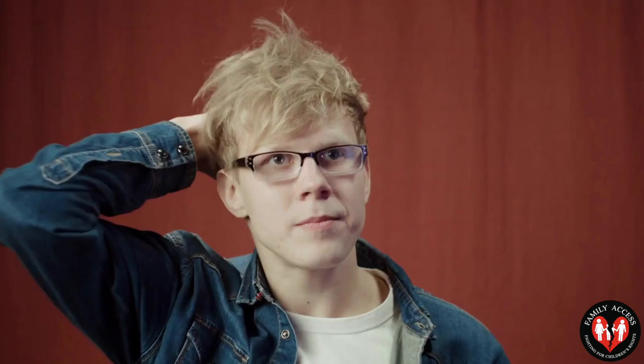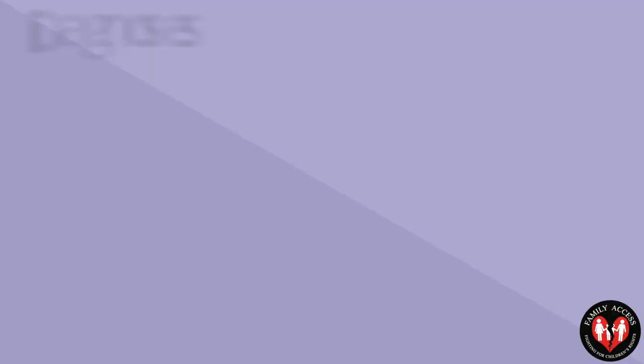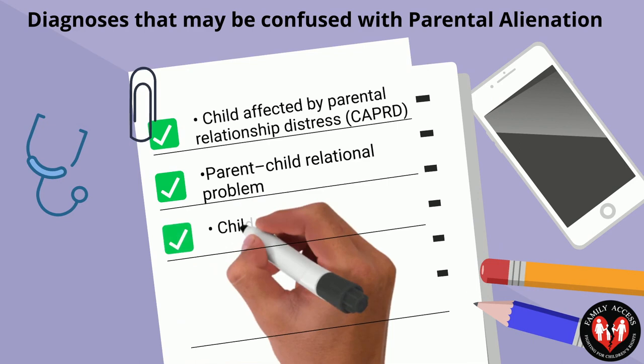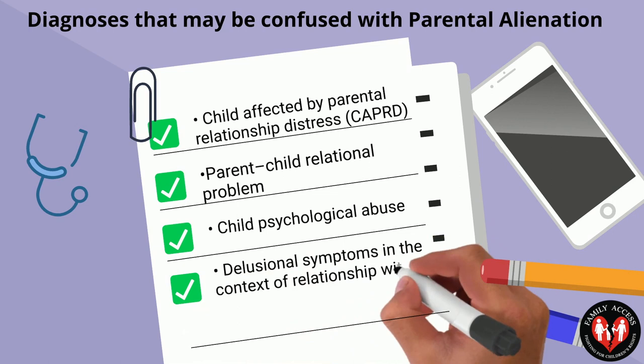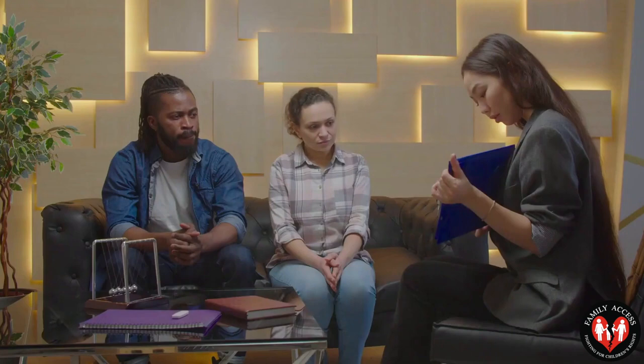There are several DSM-5-TR diagnoses that may be confused with parental alienation, though these can be distinguished in a careful clinical evaluation: (1) Child Affected by Parental Relationship Distress; (2) Parent-Child Relational Problem; (3) Child Psychological Abuse; and (4) Delusional symptoms in the context of a relationship with an individual with prominent delusions. Several psychological tests have been found to reliably distinguish alienated from non-alienated children. Some instruments were developed specifically for this task; others were established psychological tests newly applied to parental alienation cases.